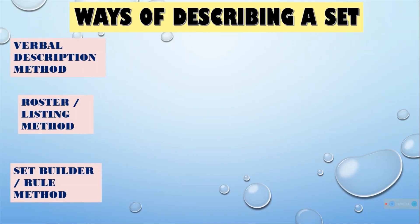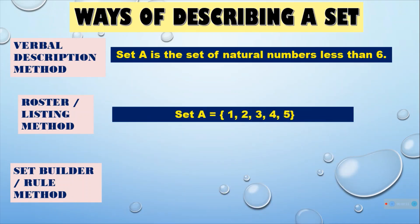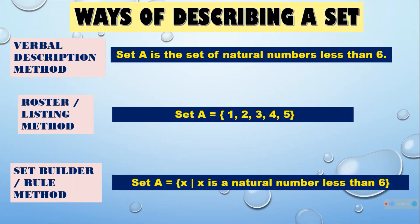Here is another example showing all three ways of describing a set. In verbal description method, we have: Set A is the set of natural numbers less than 6. If we change it into roster or listing method, we have: Set A = {1, 2, 3, 4, 5}. And if we change it into set builder or rule method, we have: Set A = {X such that X is a natural number less than 6}.